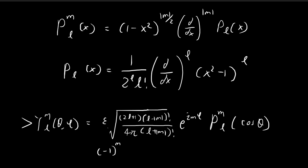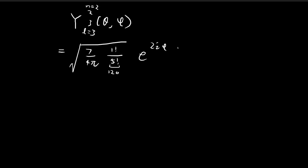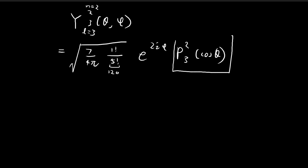Then we have the associated Legendre polynomial P₂³(cosθ). Our next challenge is to evaluate this term. Once we find it, we can substitute it back into the expression and obtain our function.